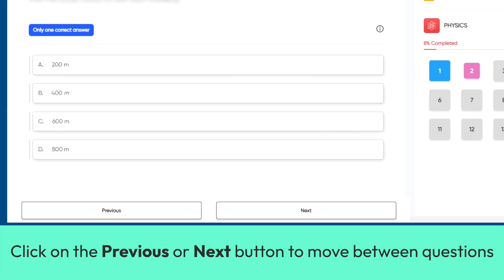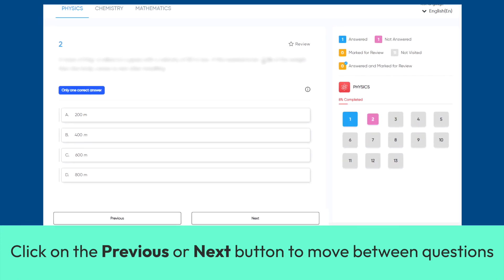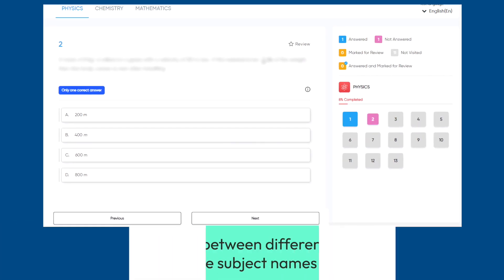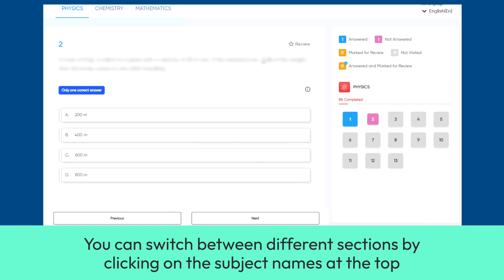Click on the Previous or Next button to move between questions. You can switch between different sections by clicking on subject names at the top.